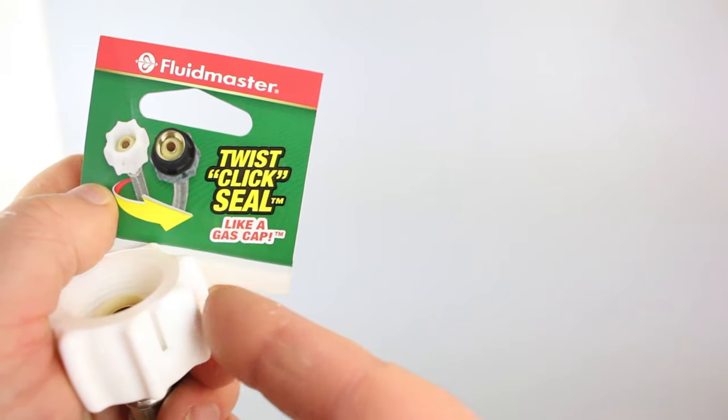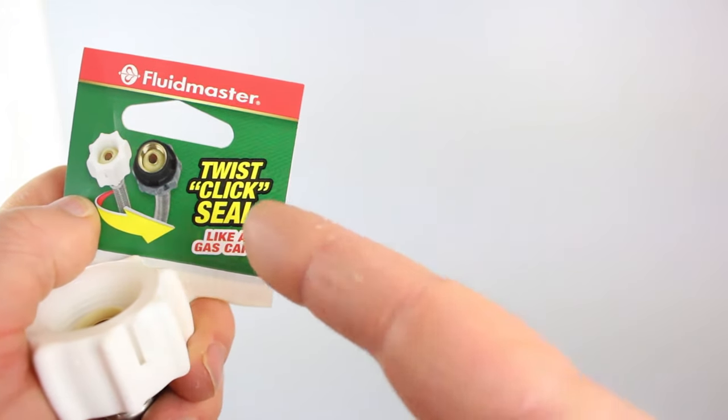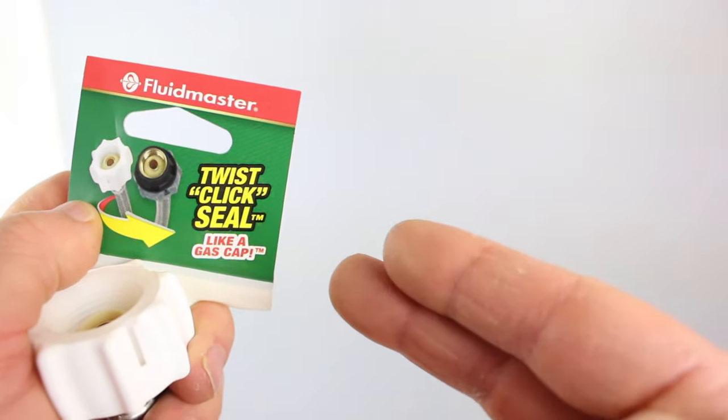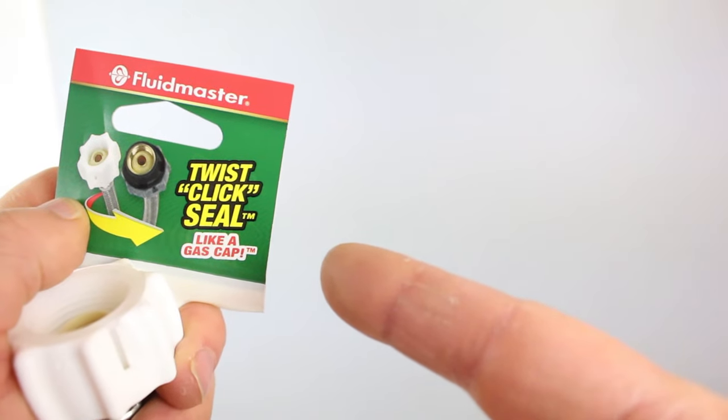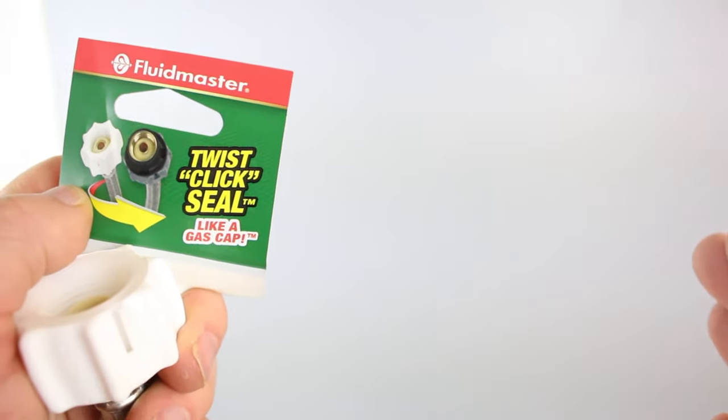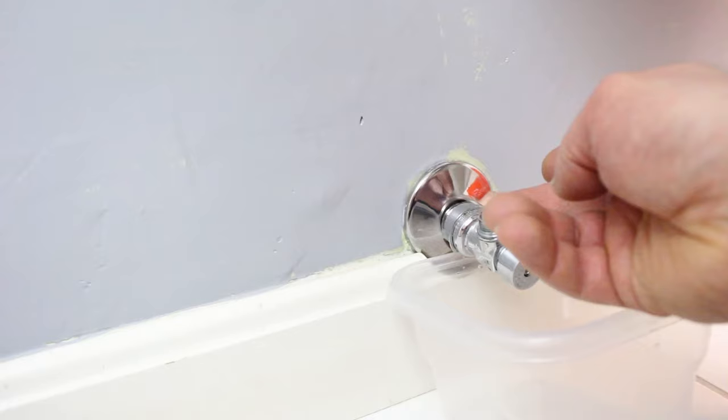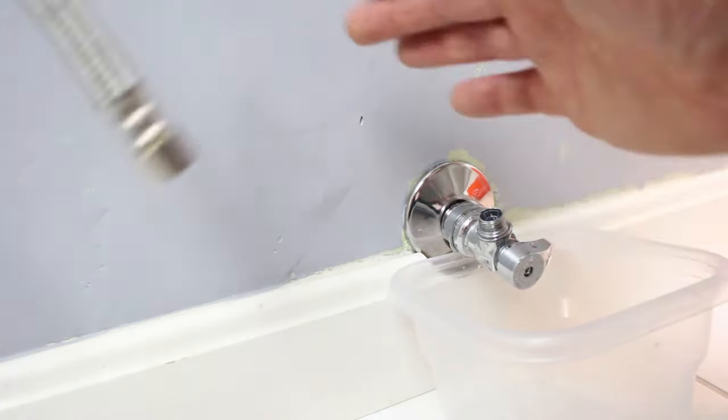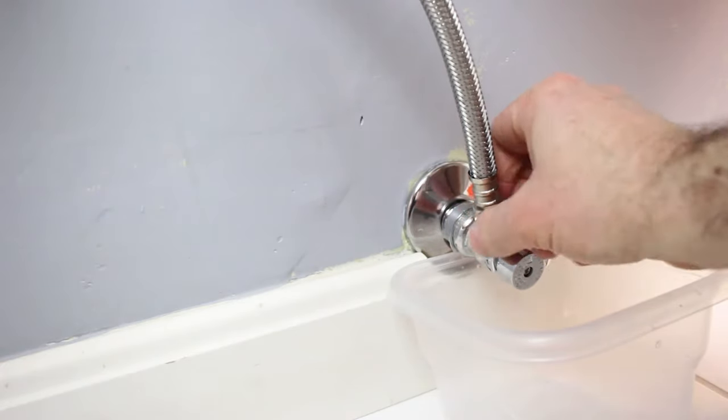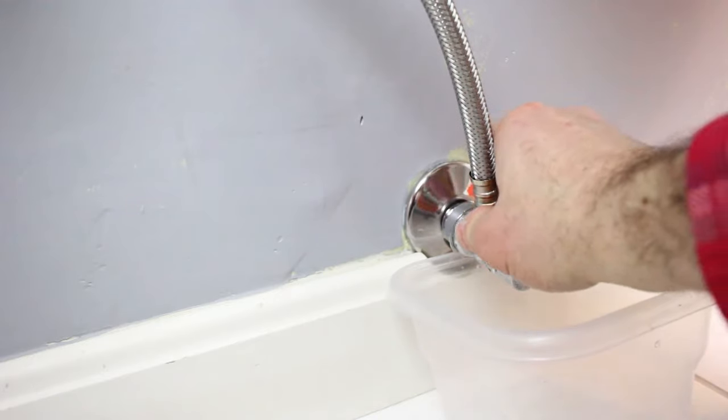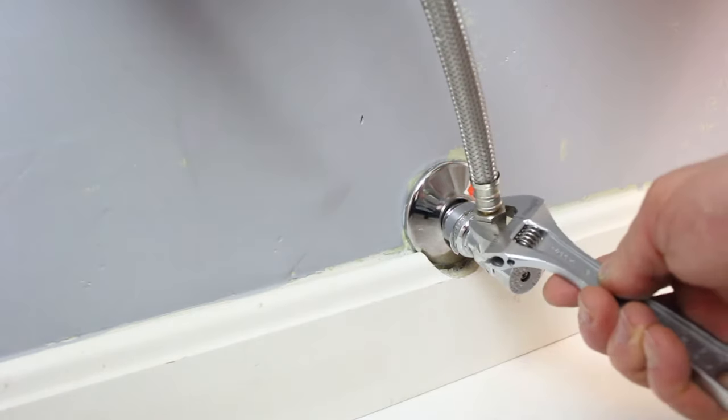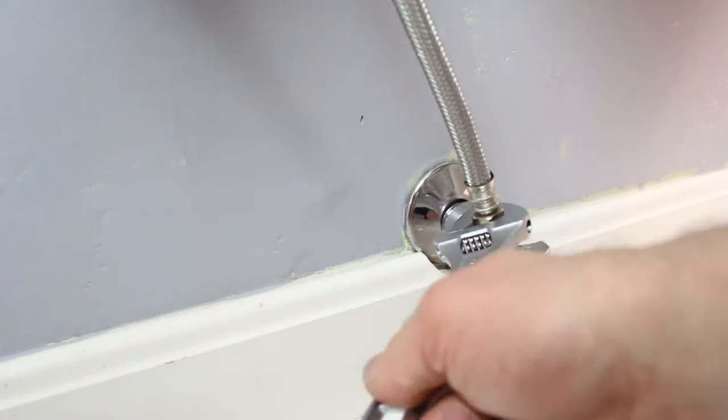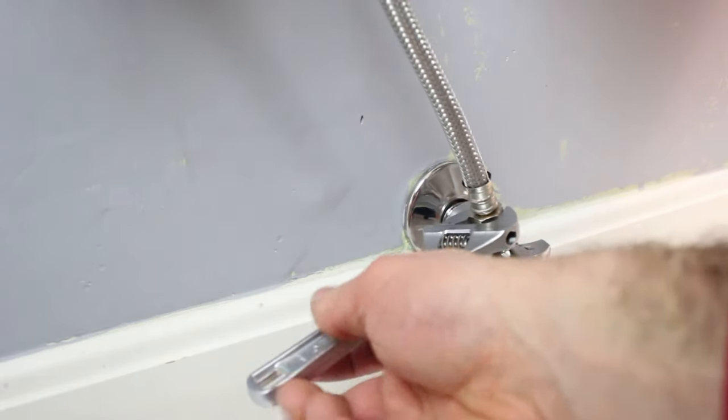The connection that goes up against your fill valve works just like a gas cap. So you're going to twist it on, you'll hear the click, and you'll know that it's sealed properly. So there's no guessing. We're going to attach the Click Seal water supply line at the shutoff valve first. So just thread it on by hand, and then tighten it until it's nice and snug. But it doesn't have to be too tight. That's about good.